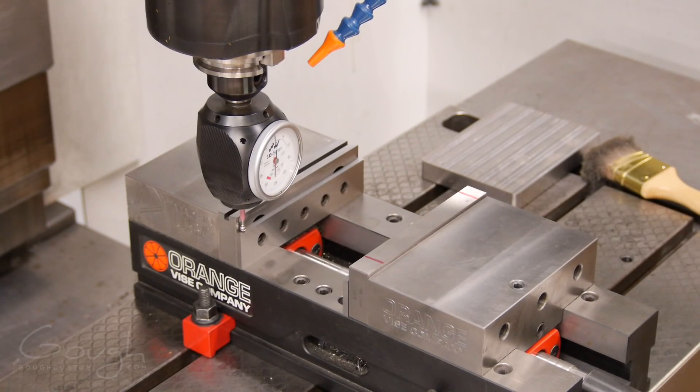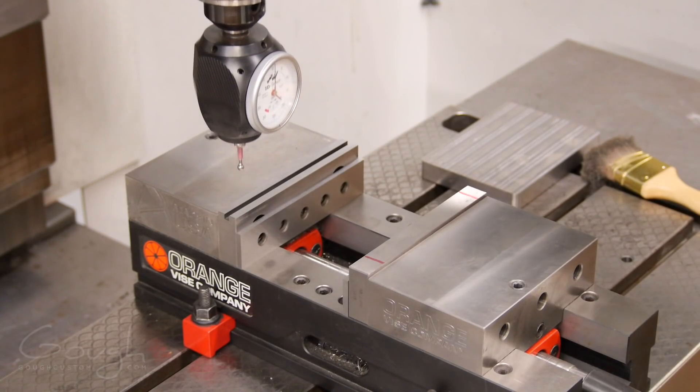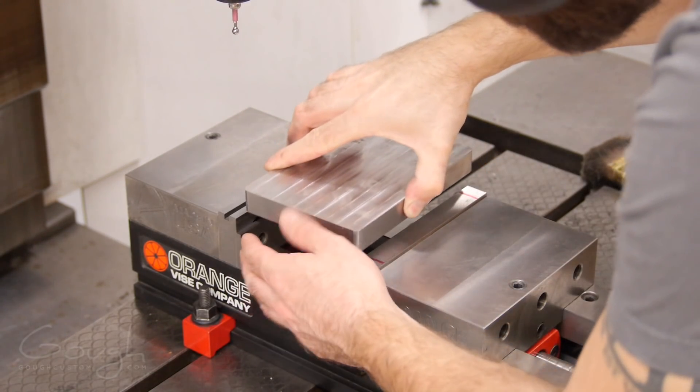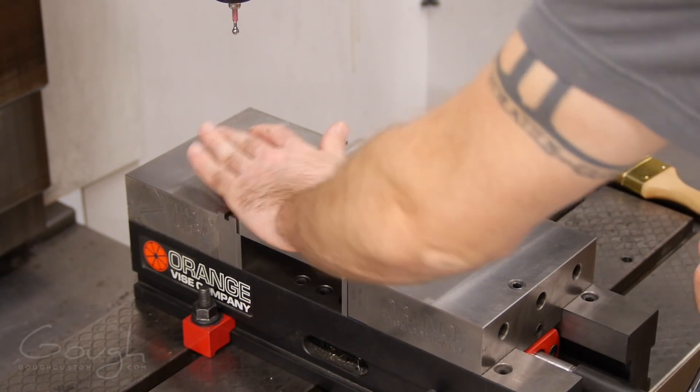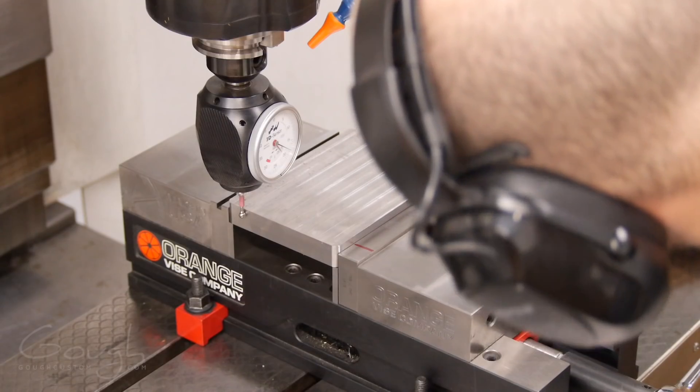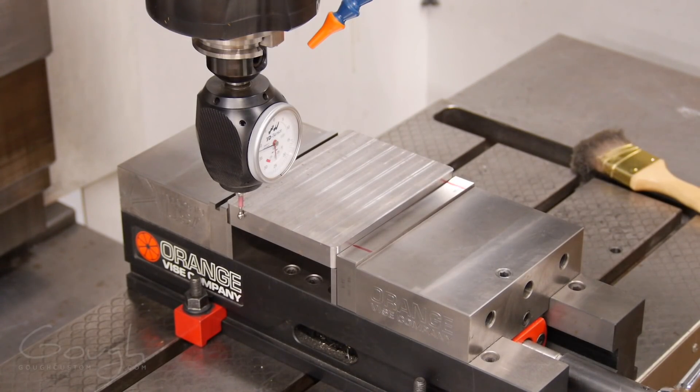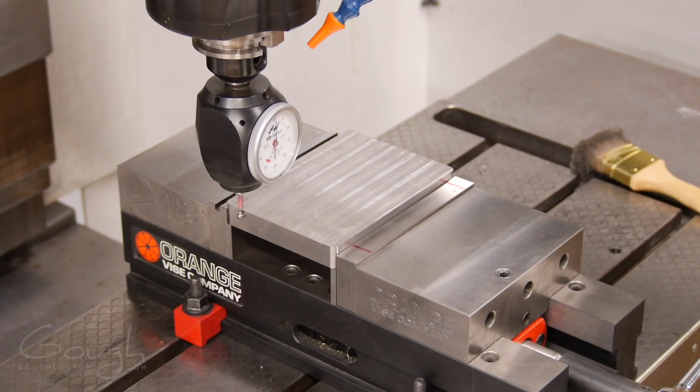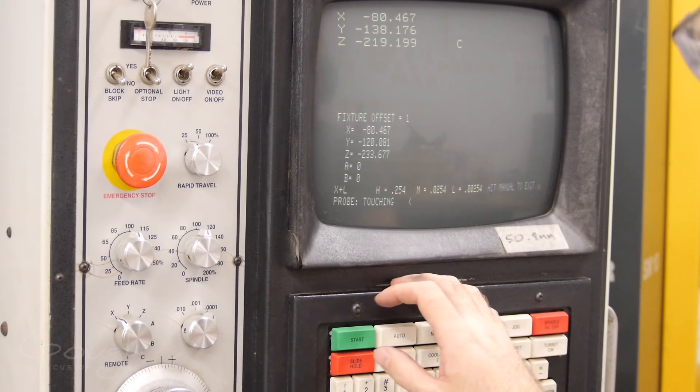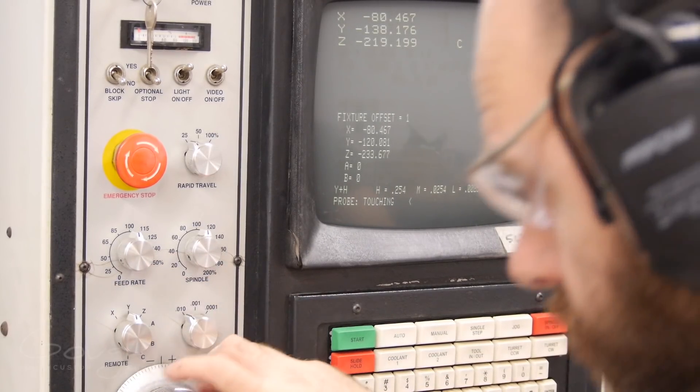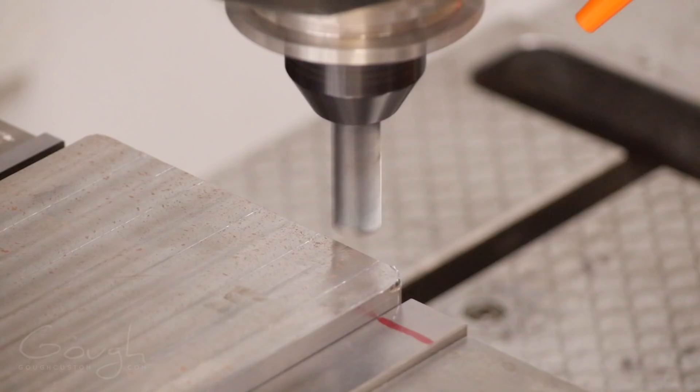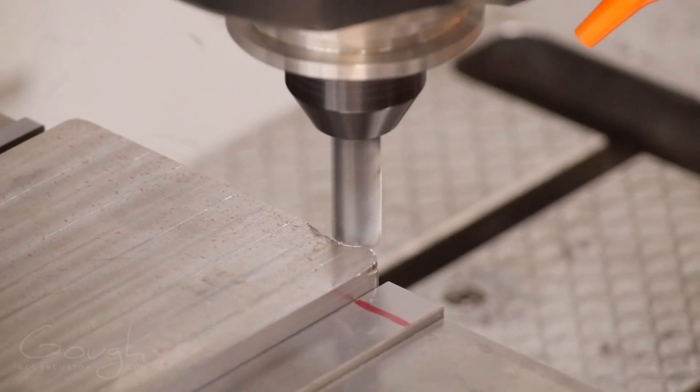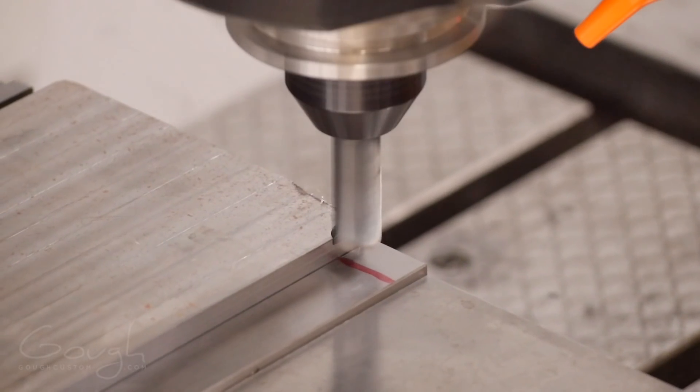Now I need to store the exact location of the block of steel in the CNC machine so it knows where to cut. To do this I'm using a Hamer 3D Taster which is a type of dial indicator that works in all three dimensions. First I measure the top of the parallel that's where the bottom of the block is going to sit. Then I measure the left edge of the block and the back edge of the block. This creates our fixture offset or our origin point that all of the toolpaths are measured from. With all of that laborious setup out of the way now I'm ready for the fun part cutting some steel.